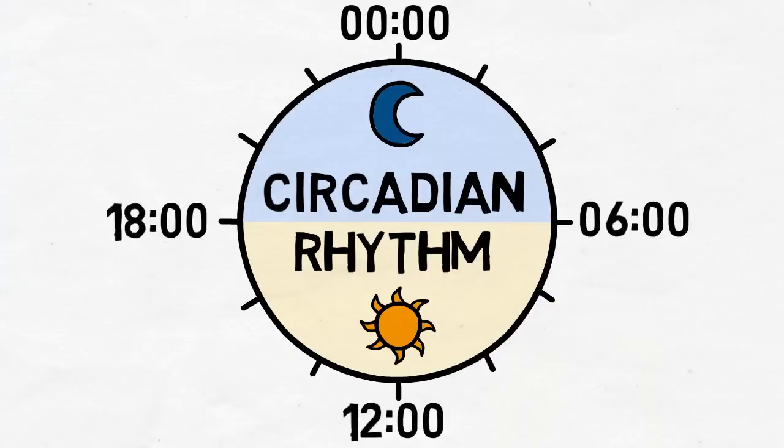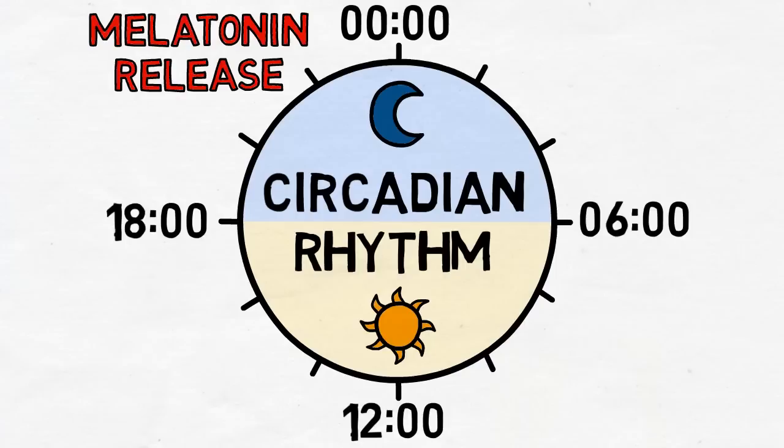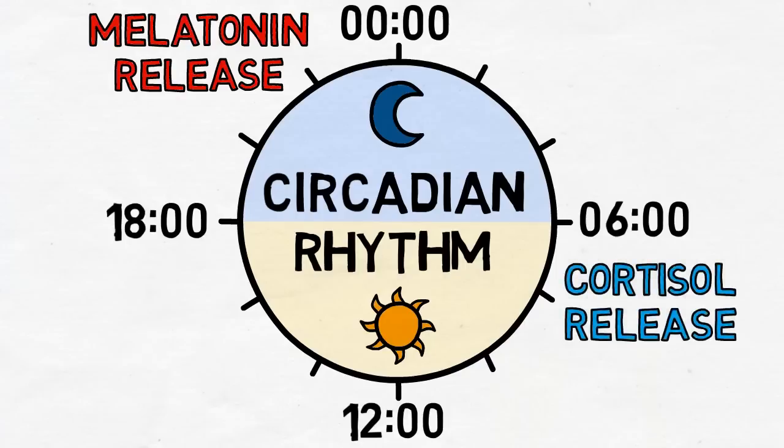If you have ever wondered how your body knows when to go to sleep and when to wake up, it's because of your circadian rhythm. When it's time to go to bed, your body releases melatonin to make you feel sleepy. When it's time to wake up, melatonin secretion stops and your body releases cortisol to get you up and moving.